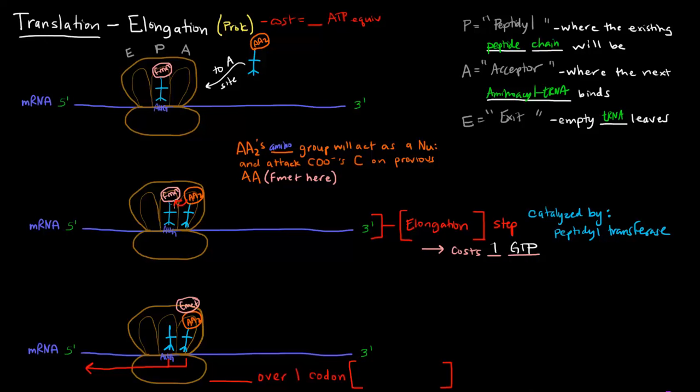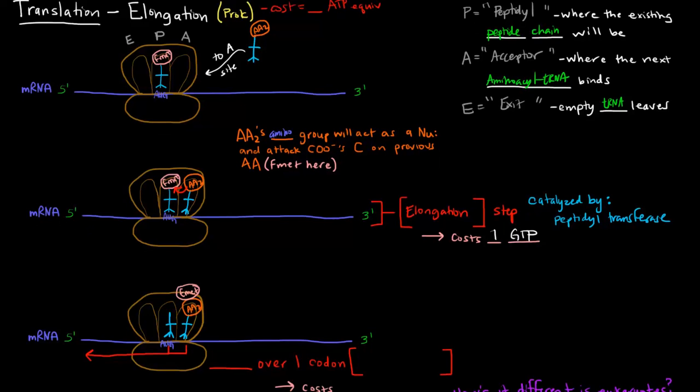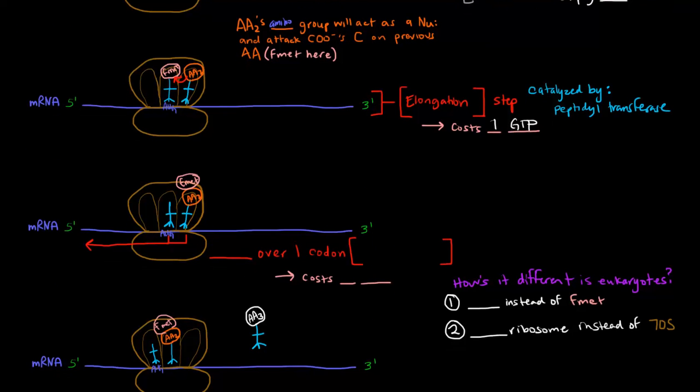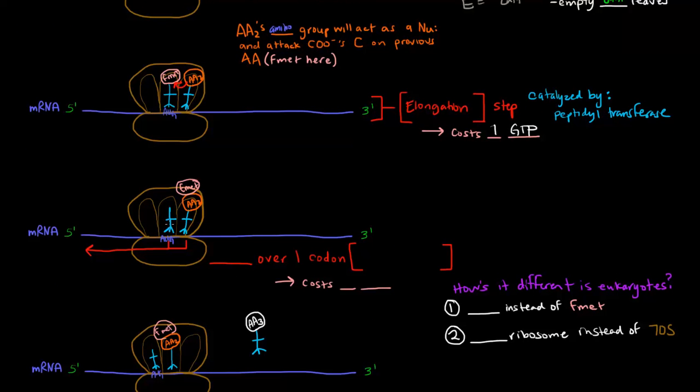Once that covalent bond forms between amino acid number two and formyl-methionine, the bond holding formyl-methionine to its tRNA breaks. The tRNA in the P site is now empty and the existing polypeptide chain is in the acceptor site. But the polypeptide chain should be in the P site, so both will shift over one codon space.